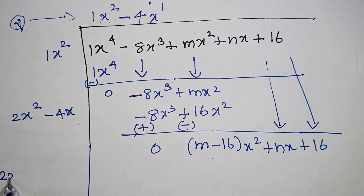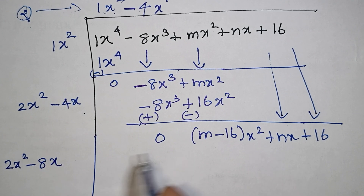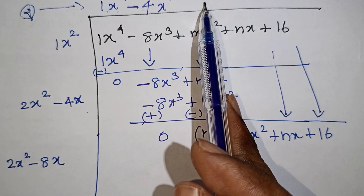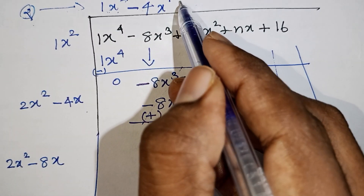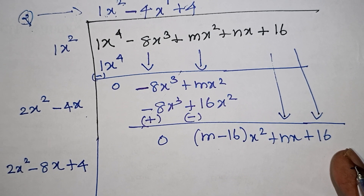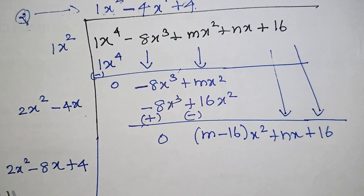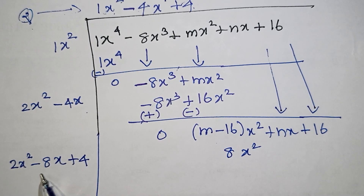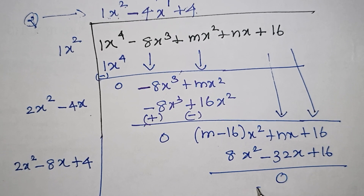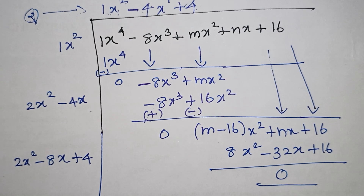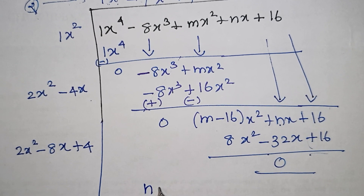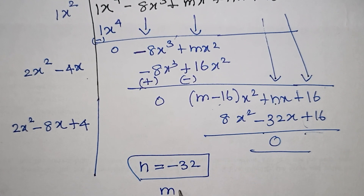For the next step: 2 times x squared is 2x squared; 4 times 8 is 32; so we get minus 32x. Looking at the denominator gives 0. If the given term is a perfect square, then n plus 32 is equal to 0, and m minus 16 minus some value is equal to 0. Adding all terms, we need 24 as the answer.